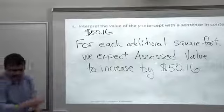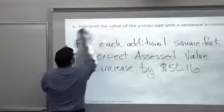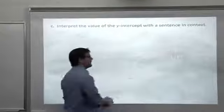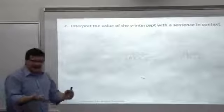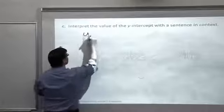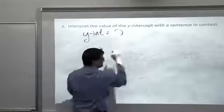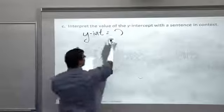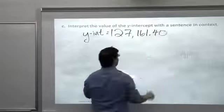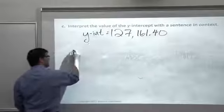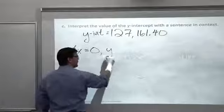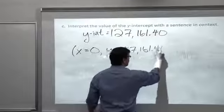Last question, part C: interpret the value of the Y-intercept. We need two things to happen for the Y-intercept to be interpretable. One, I've got to have data near X equals zero. And two, the value needs to make sense. What was the value? That Y-intercept was equal to 127,161 and 40 cents. That means that if I was to plug in X equals zero to my equation, this point here would fall on that regression line. 127,161.40. That is a point on our regression equation.